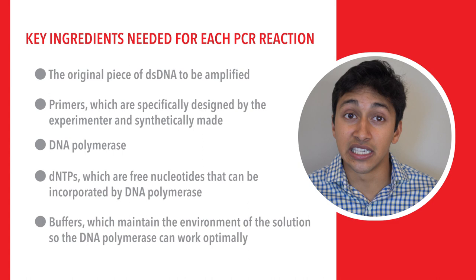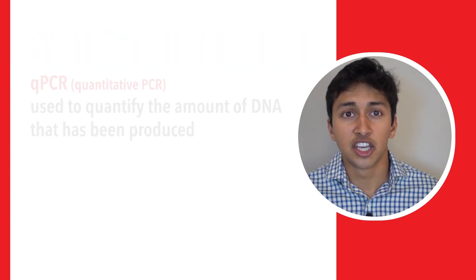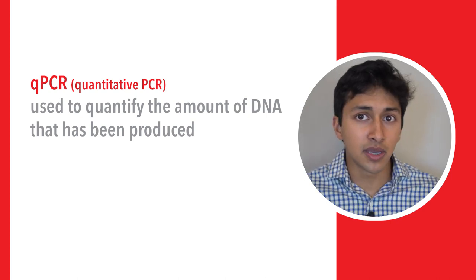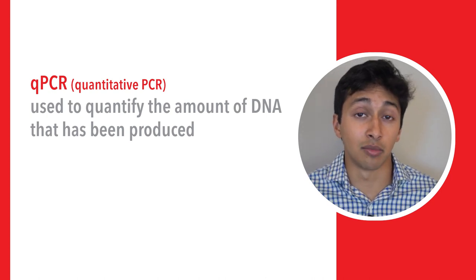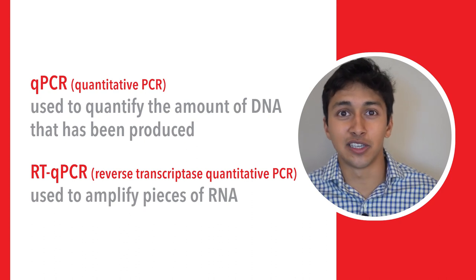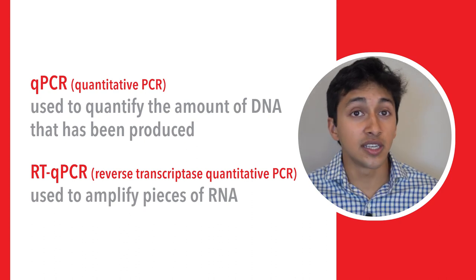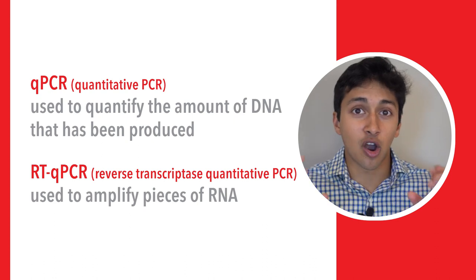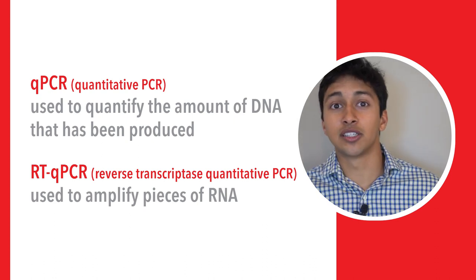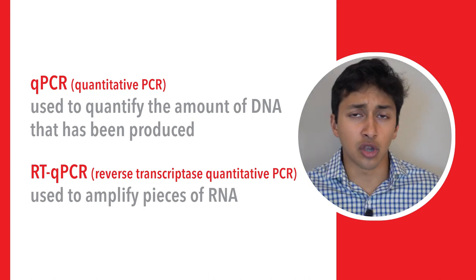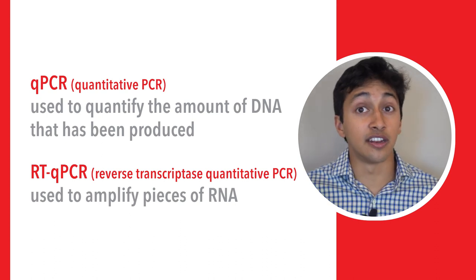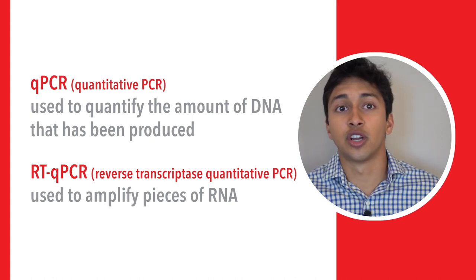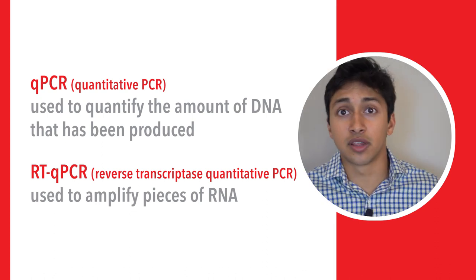There are a few variations on PCR you might see on the MCAT. qPCR, or quantitative PCR, is used to quantify the amount of DNA that has been produced, often using a fluorescent probe that can be visually detected when bound to double-stranded DNA. Reverse transcriptase quantitative PCR is used to amplify pieces of RNA. A reverse transcriptase enzyme first converts the RNA to its complementary DNA — that's what the RT stands for. This first step is necessary because DNA polymerase can only work with DNA and not RNA. Researchers often use RT-qPCR to compare different levels of mRNA present in a cellular sample, for example looking at tumor expression of an mRNA molecule before and after treatment with a potential new therapeutic.